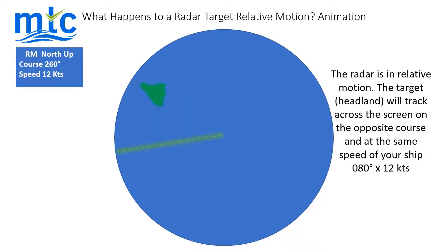With the radar in relative motion, the target will track across the radar screen on the reciprocal opposite course and at the same speed of your ship, which in this case is 080 degrees by 12 knots.